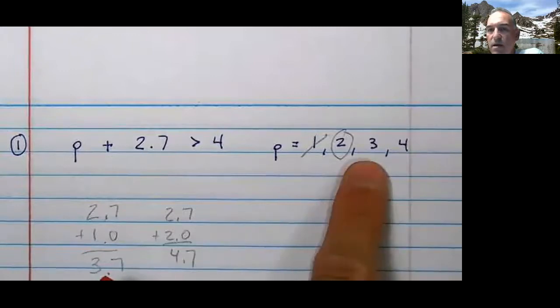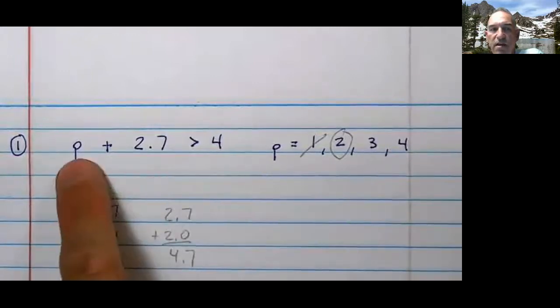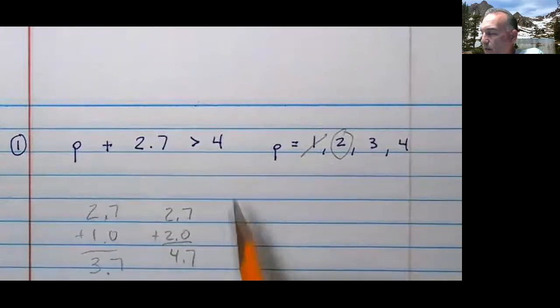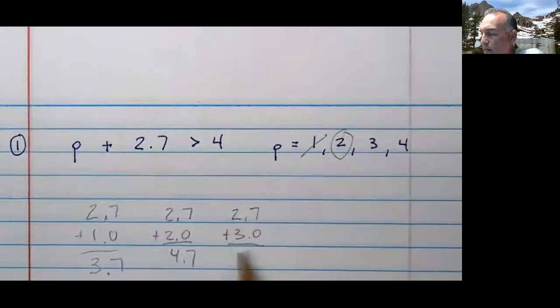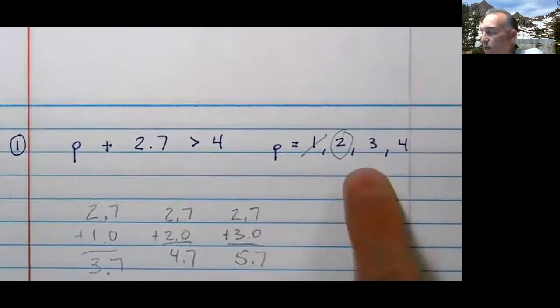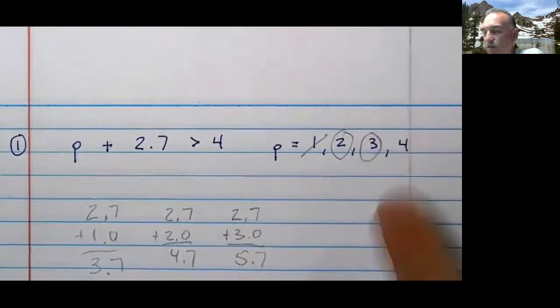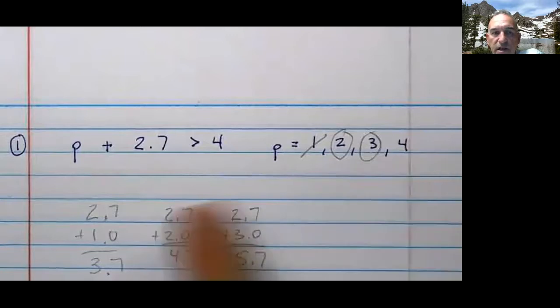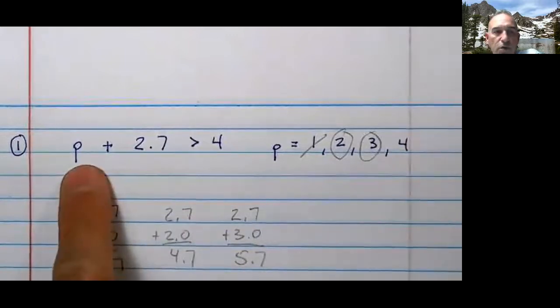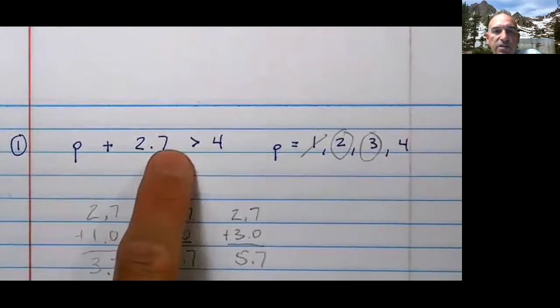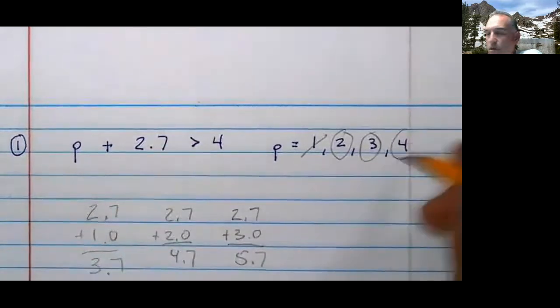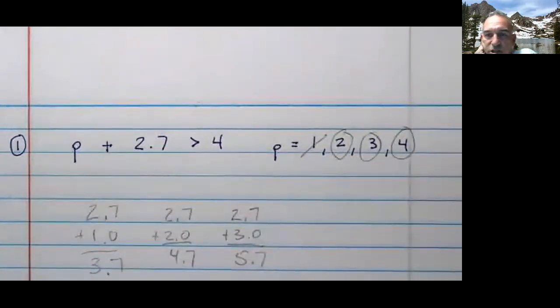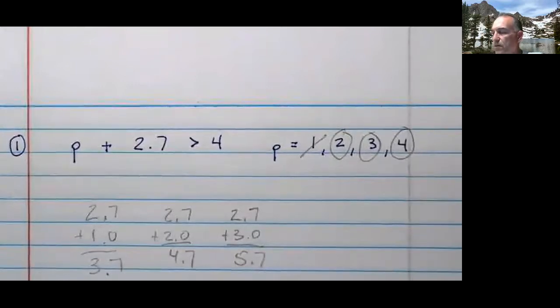Let's do another one. So look, here's 3. If I were to substitute that for P, I would have 2.7 plus 3. I have 5.7. So 3 is a solution. Is 4 going to be a solution? Of course it is. You see if you had 4 here, you would have 6.7 is greater than 4. So notice, there are three solutions there.